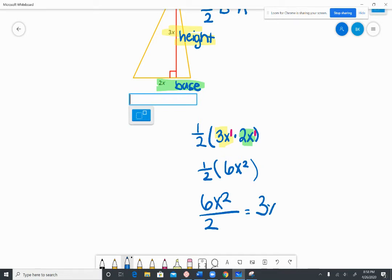And again, that x squared stays the same. And that is your answer. 3x squared is the area of that triangle.